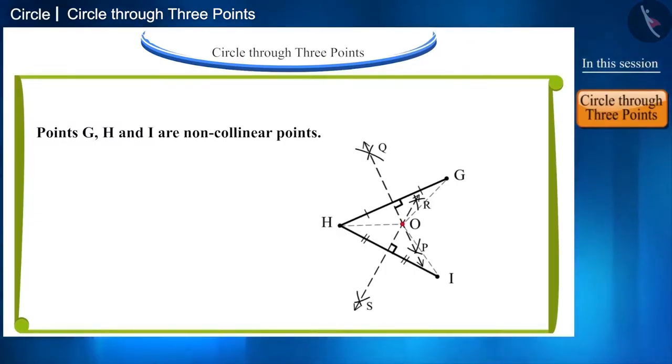Point O is located on perpendicular bisector PQ of line segment GH. That is why OG and OH are equal. Similarly, OH and OI will also be equal.